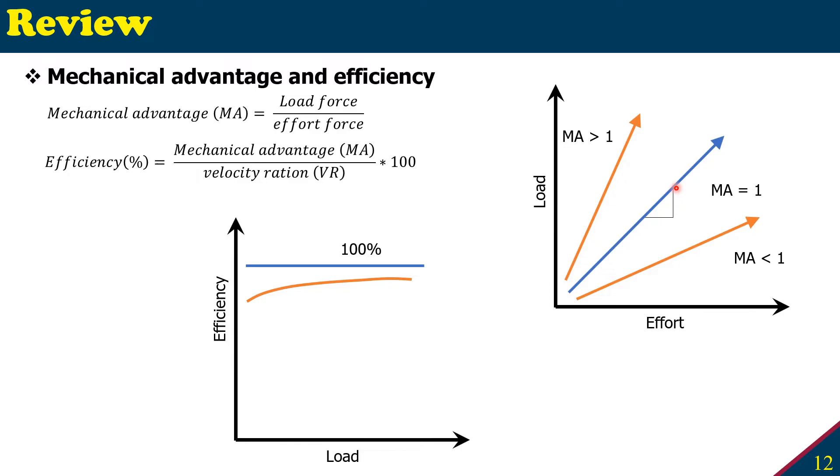Now the efficiency is the ratio of the mechanical advantage over velocity ratio. Normally it will be 100, but in real life you will see the efficiency changes. It starts from a little lower, then it goes a little higher, then it becomes plateau.